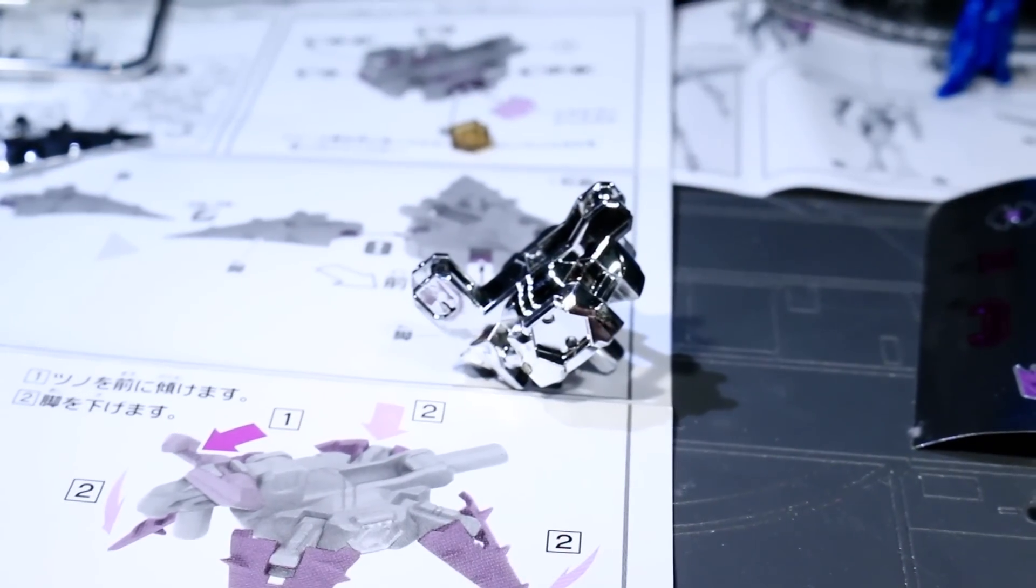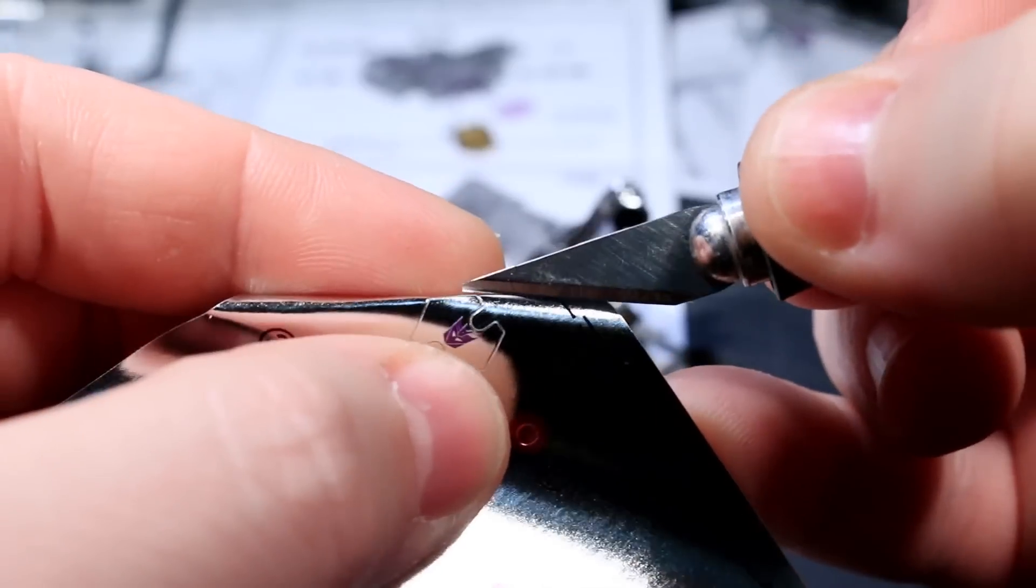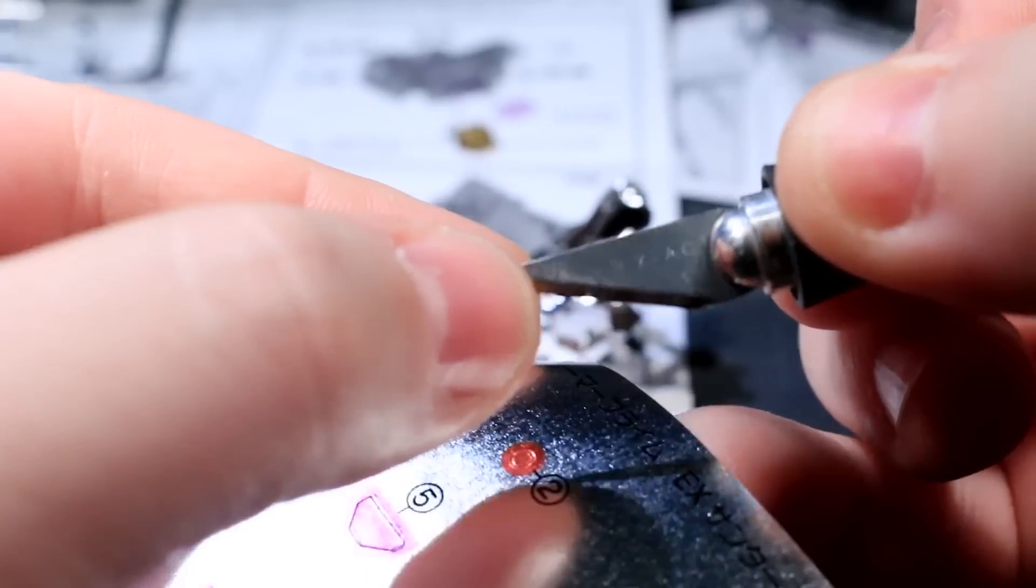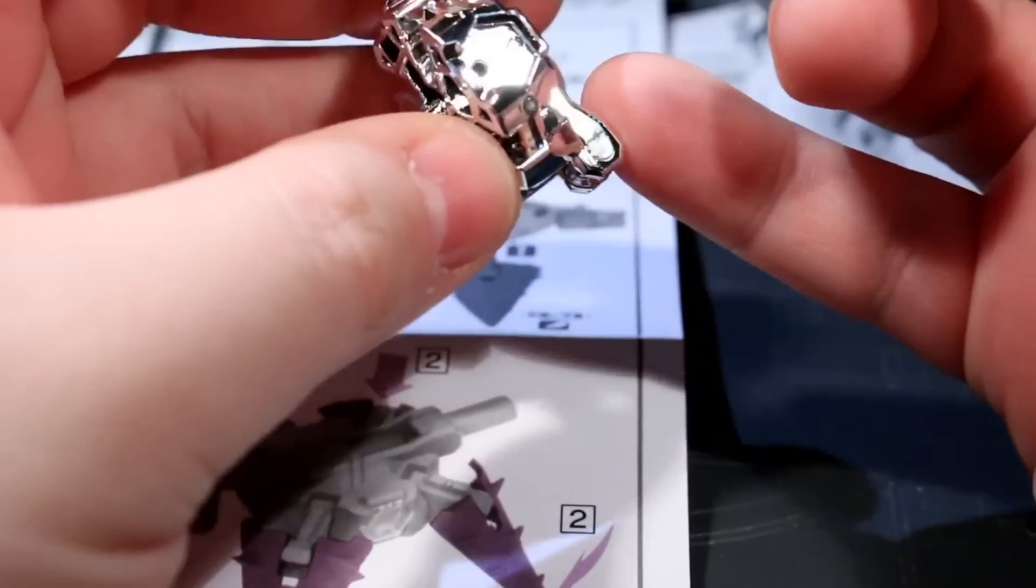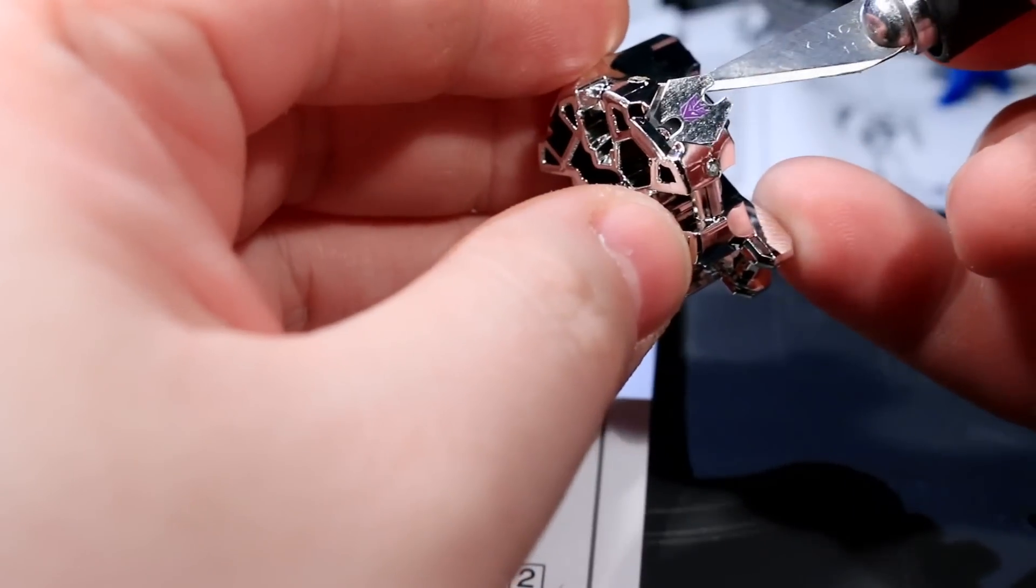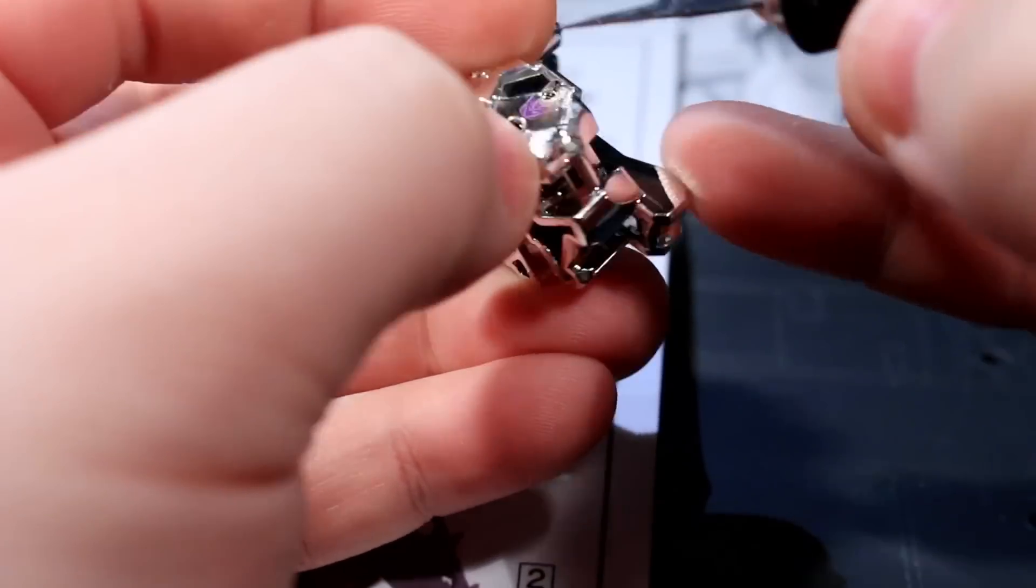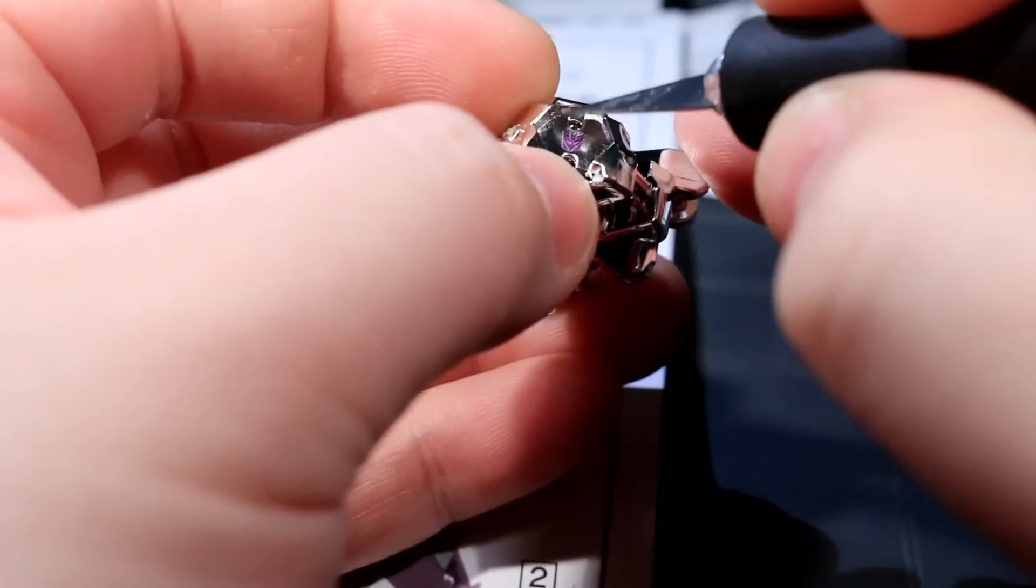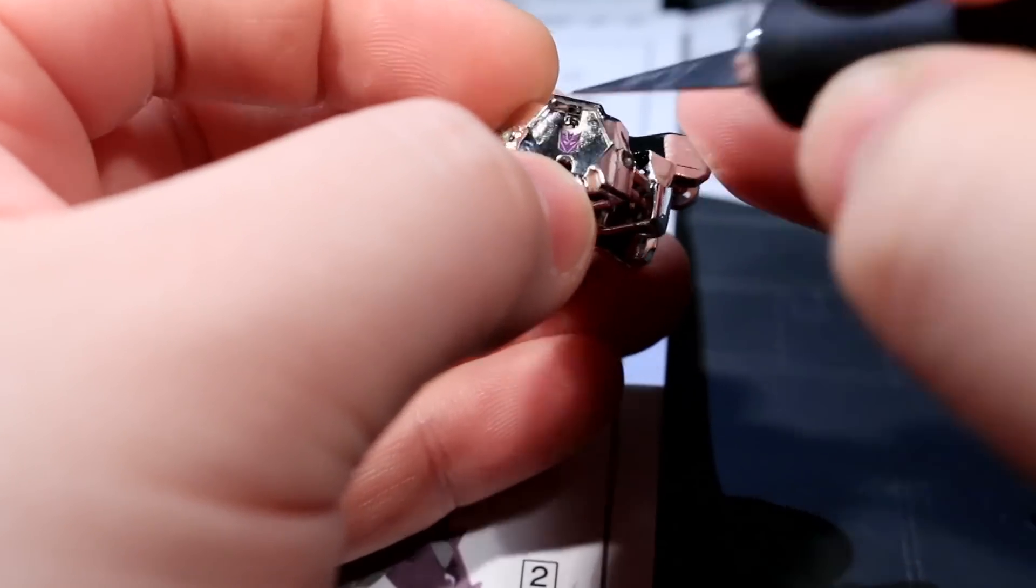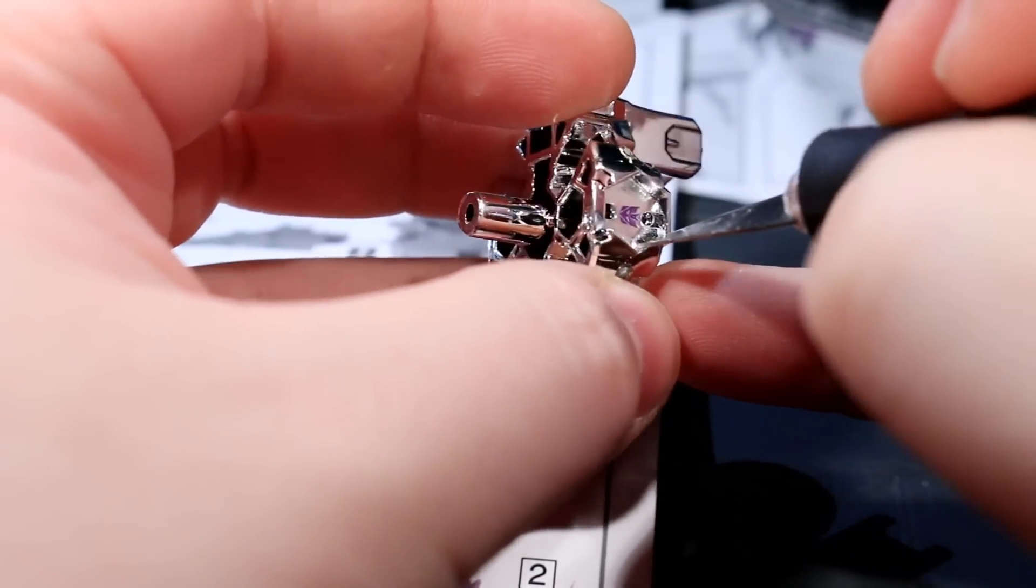The other thing that put me off that Optimus Prime Orion Pax was that his special shiny Micron was just Ratchet's again. Ratchet's Micron has like 50,000 variations over the course of the Arms Micron history, and that was a real nail in the coffin on me wanting to have anything to do with it. I don't dislike Ratchet's Arms Micron, but I don't need it this many times. This thing looks good with Ratchet. It doesn't really belong anywhere else, in my opinion.